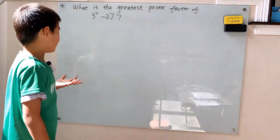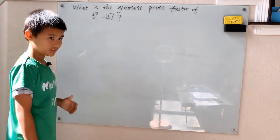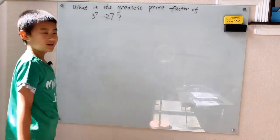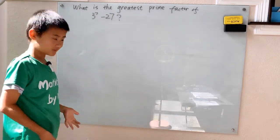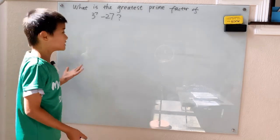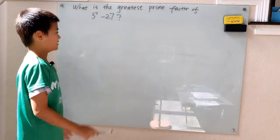What is the greatest prime factor of 3 to the 7th minus 27? Now usually when we see a simple equation like this, we go ahead and compute this. It looks very simple, but we got that 3 to the 7th and that drives me crazy.